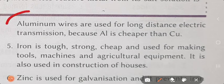Point number 5: aluminium wires are used for long distance electric transmission because aluminium is cheaper than copper.